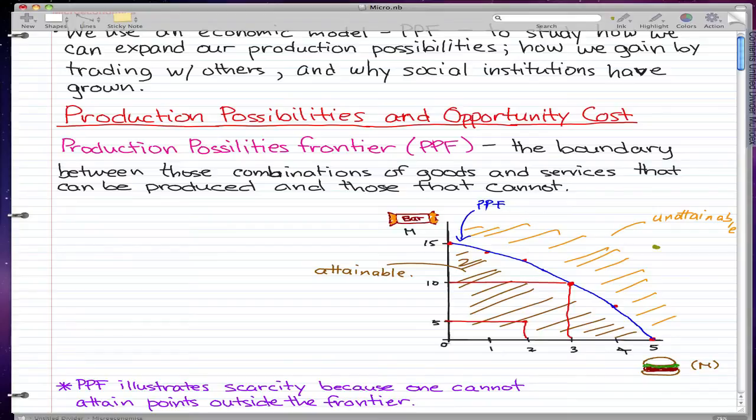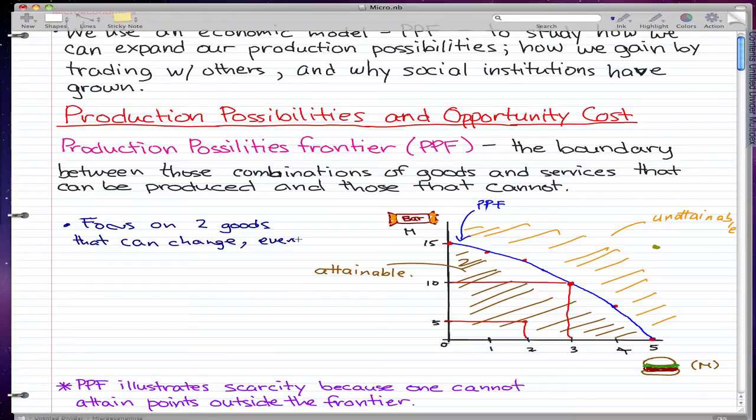The notes for this graph: we are focusing on two goods that can change. Everything else is constant.